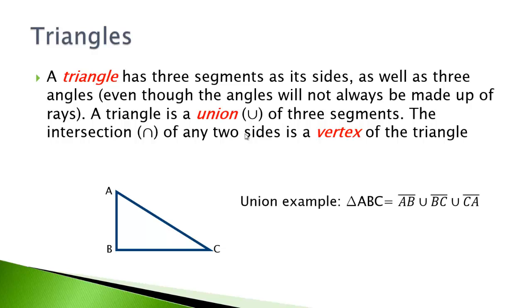So an example of a union - when you see this, that means union. That means you're joining them together. So this kind of U shape means union. As long as you can identify union, you should know that the other one is intersection. So the triangle ABC is formed by the union of segment AB, segment BC, and segment CA.